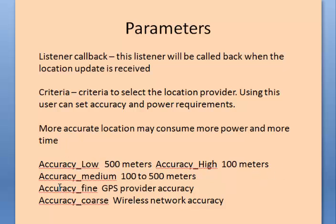Accuracy fine corresponds to GPS, which gives approximately 10-meter accuracy. Coarse accuracy uses the wireless network to compute location.